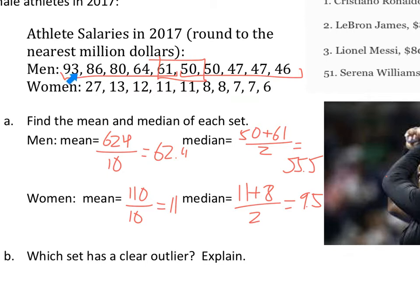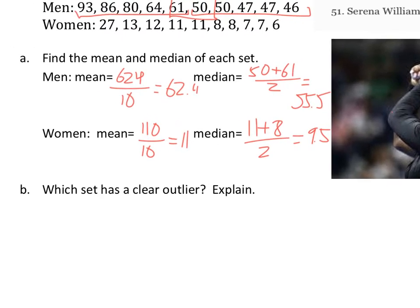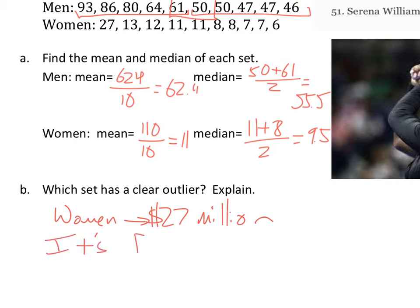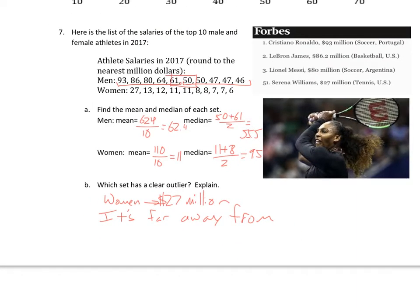Which one has a clear outlier? For the women, the values are mostly close together — 6 and 7 are close, 13 is close to its neighbors — but 27 is twice as big as 13, which is right next to it. So the women have an outlier of 27 million dollars. That's Serena Williams — she gets paid a lot because she's awesome.